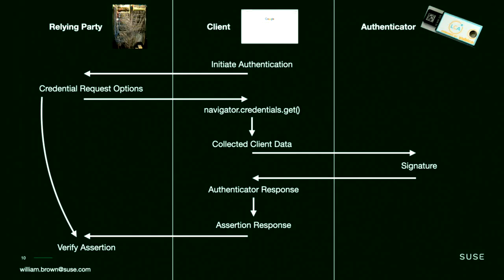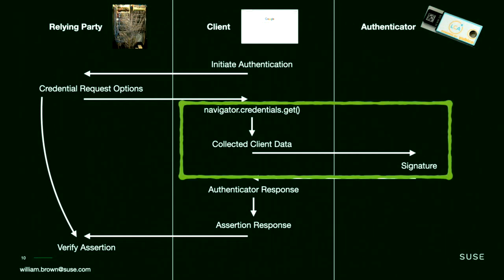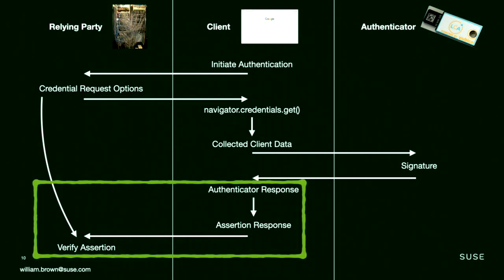These come together in a series of interactions. The general overview is that within your web browser you initiate an authentication to the website, which sends you back a challenge. The challenge is processed by the client and sent into the authenticator. The authenticator creates a signature, which is sent back to your web browser, where it is passed back to the relying party, who validates that the authenticator was legitimate.